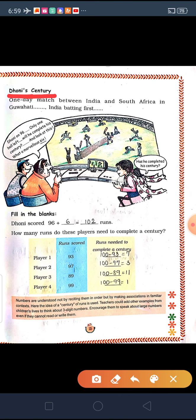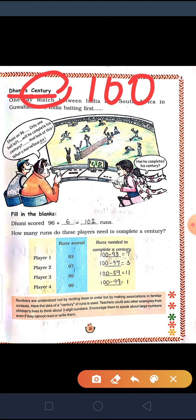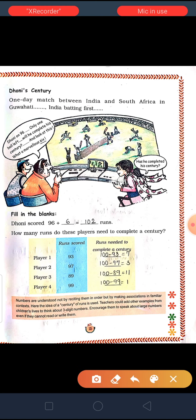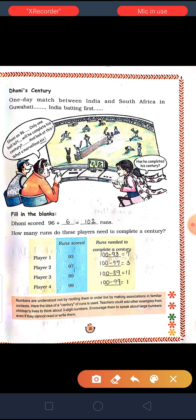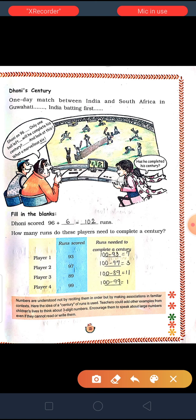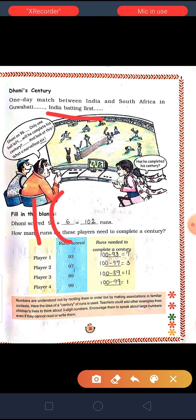What do you mean by century? Century means total 100. If you count in terms of time, or as you can say calendar, one century is equal to 100 years. What about the century given in this page? One day match between India and South Africa in Guwahati, India batting first. As we all know in cricket, century means to make 100 runs.